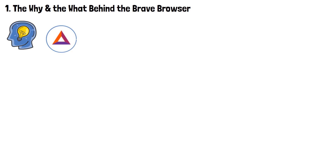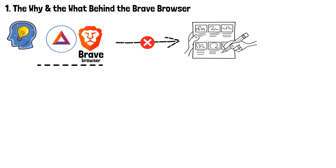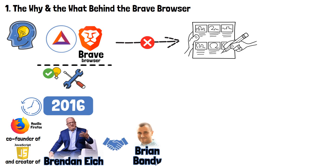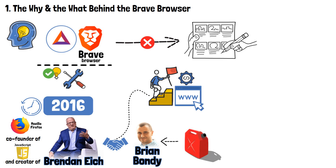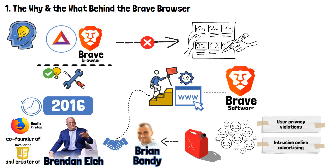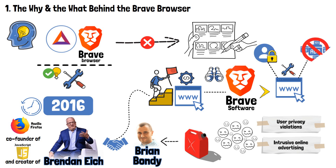To understand Basic Attention Token and Brave Browser, it's important to understand the reasons behind their creation. Back in 2016, Brendan Eich, the co-founder of Mozilla Firefox and the creator of JavaScript, teamed up with his colleague Brian Bondy. Fueled by growing concerns over user privacy violations and intrusive online advertising, they founded Brave Software with a clear vision: to create a browser that respects user privacy, blocks unwanted ads, and introduces a new way of rewarding content creators.